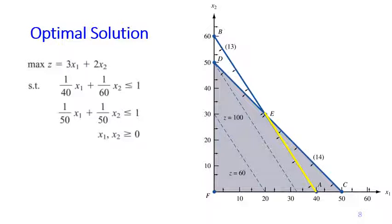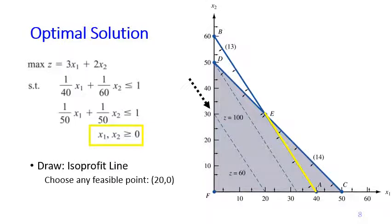We now have the objective function, decision variables, constraints, and sign restrictions. To find the optimal solution, we draw the iso-profit line, choosing a feasible point such as (20, 0), and drag it in parallel in the maximization direction. Instead of hitting a single maximum point as in the Giapetto or Dorian Auto problems, here we hit the entire line segment from E to A.